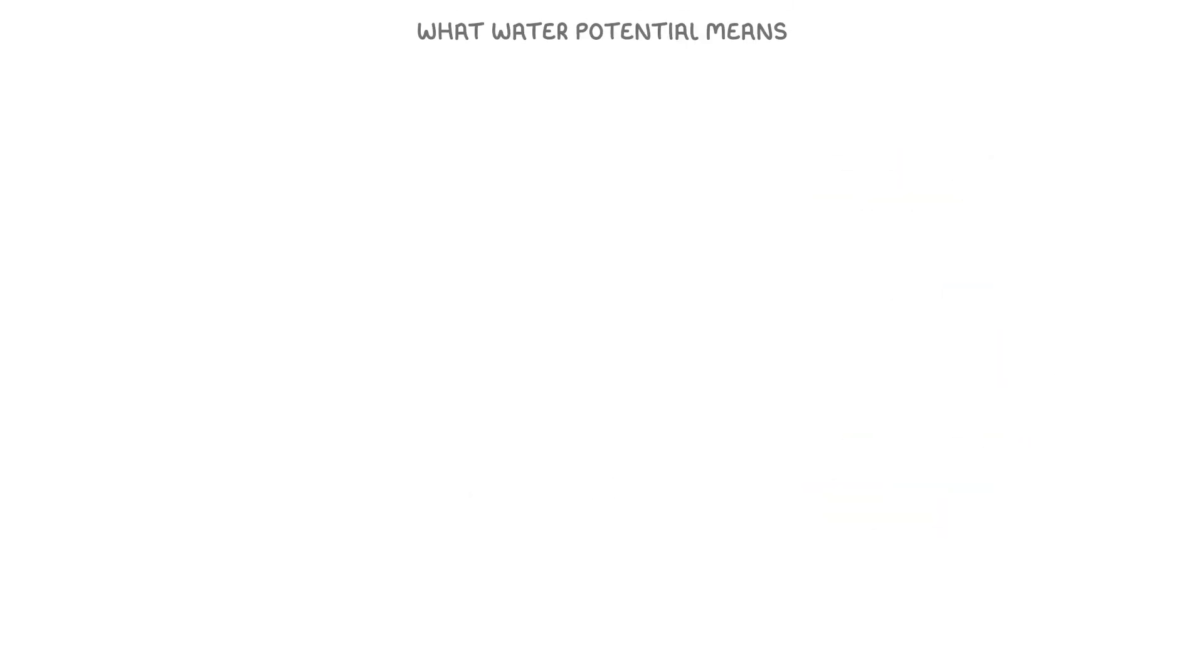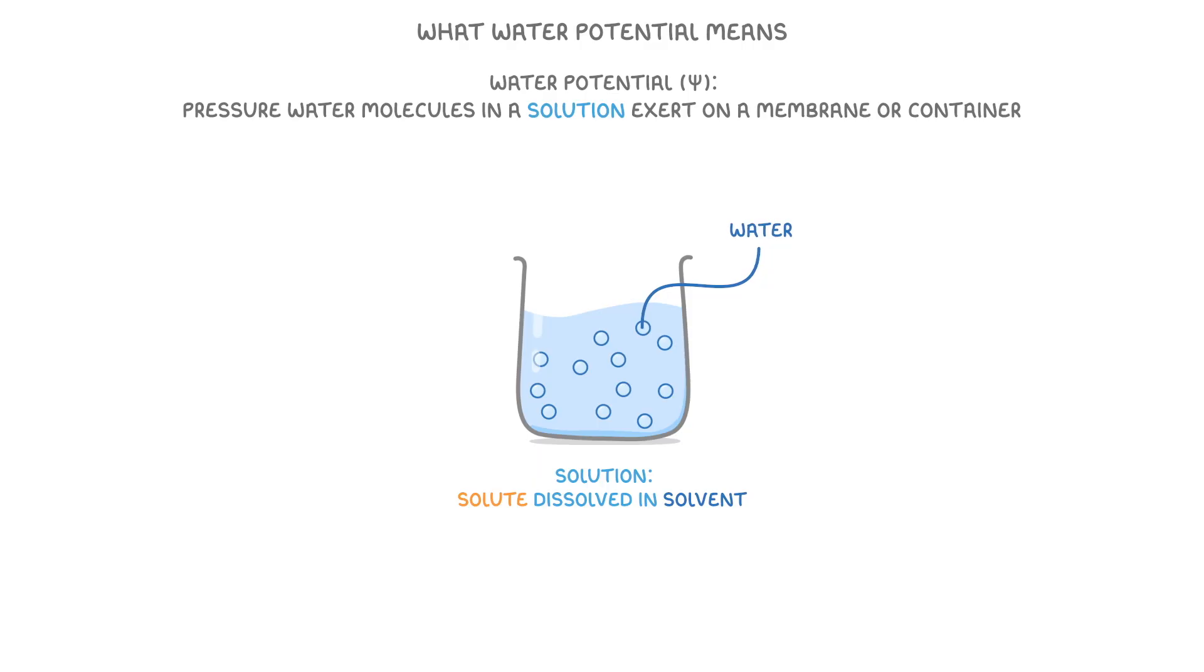Let's begin by understanding what water potential means. We use this term water potential, which is often represented by the Greek letter psi, to describe the pressure that water molecules in a solution exert on a membrane or on the container they're in. When we talk about a solution, we're referring to a mixture where a solute is dissolved in a solvent. As an example, if we grab a beaker of water and dissolve some glucose in it, the glucose is the solute and the water is the solvent.